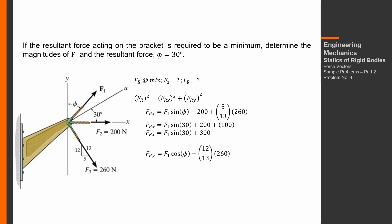For the summation of y-components: F1 cosine(phi) — cosine because the y-component is adjacent to phi — minus (12/13)(260) because the y-component of F3 is downward. Simplifying: (12)(20) = 240. Substituting phi equals 30, FRy equals F1 cosine 30 minus 240.